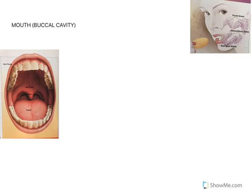Food first enters into the mouth, also called the buccal cavity. In the buccal cavity, we need to know the functions of three things: the teeth, the tongue, and the saliva.